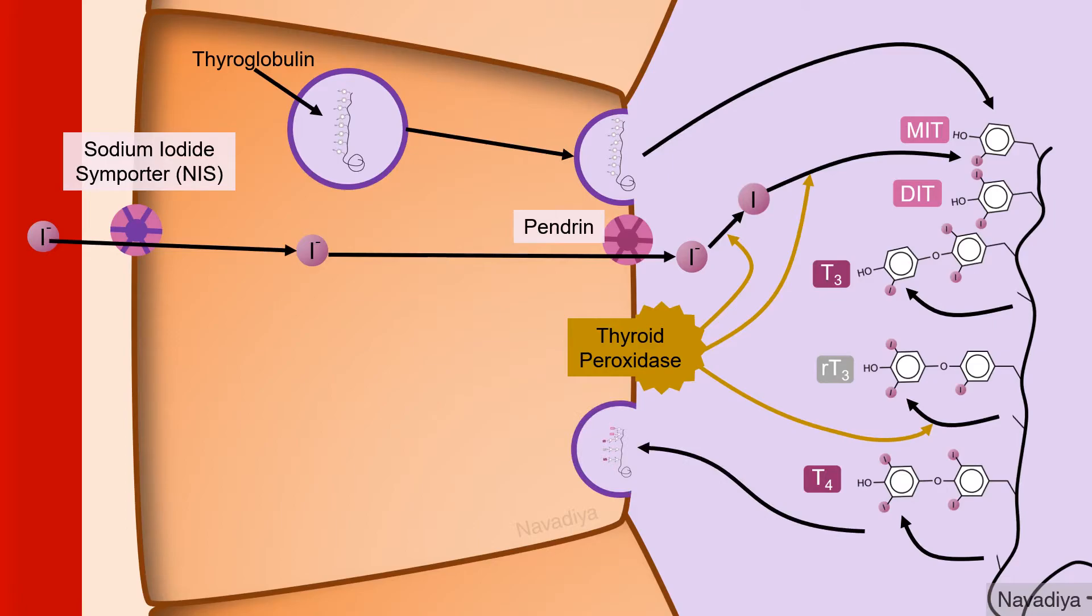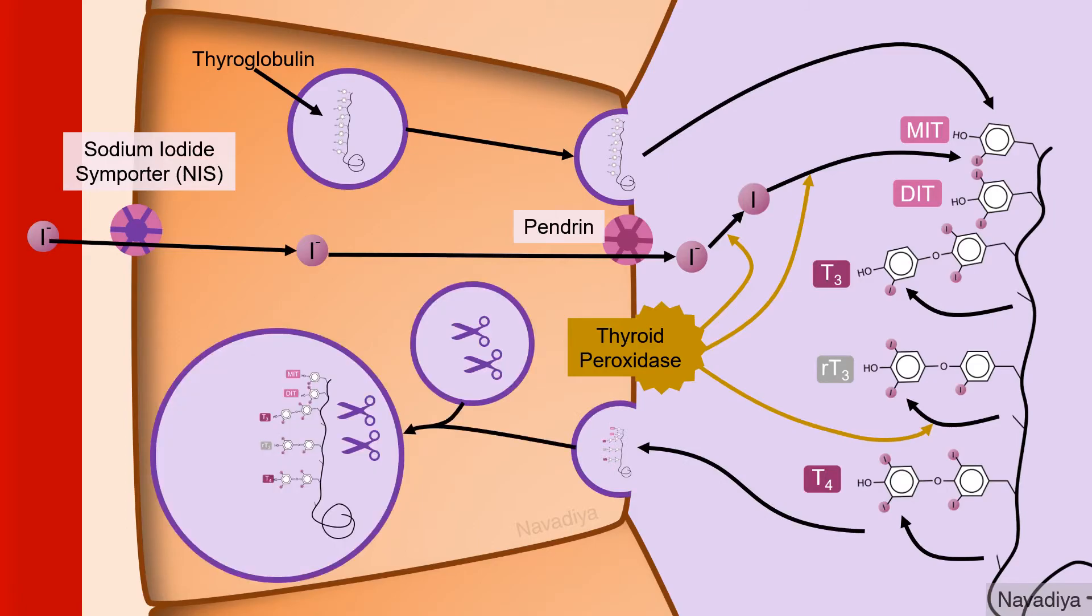Coupling of these residues to form T3 and T4. Endocytosis of thyroglobulin, its hydrolysis by lysosomal enzymes. Release of T3 and T4 into the blood, T4 being in much larger quantity as compared to T3. And deiodination of mono and diiodotyrosines and reutilization of iodide.